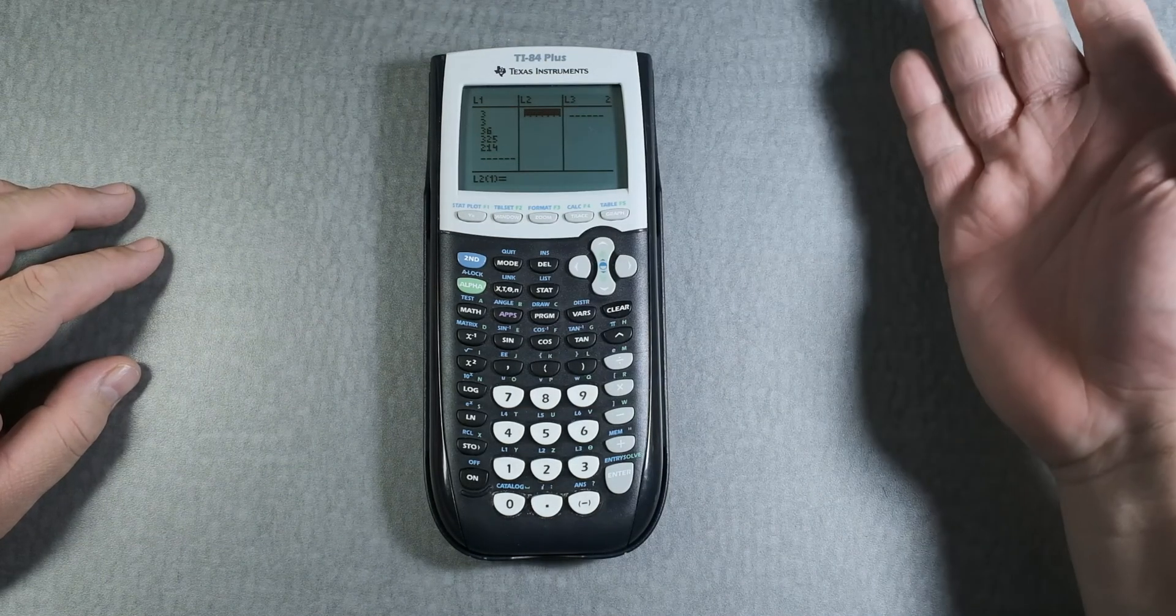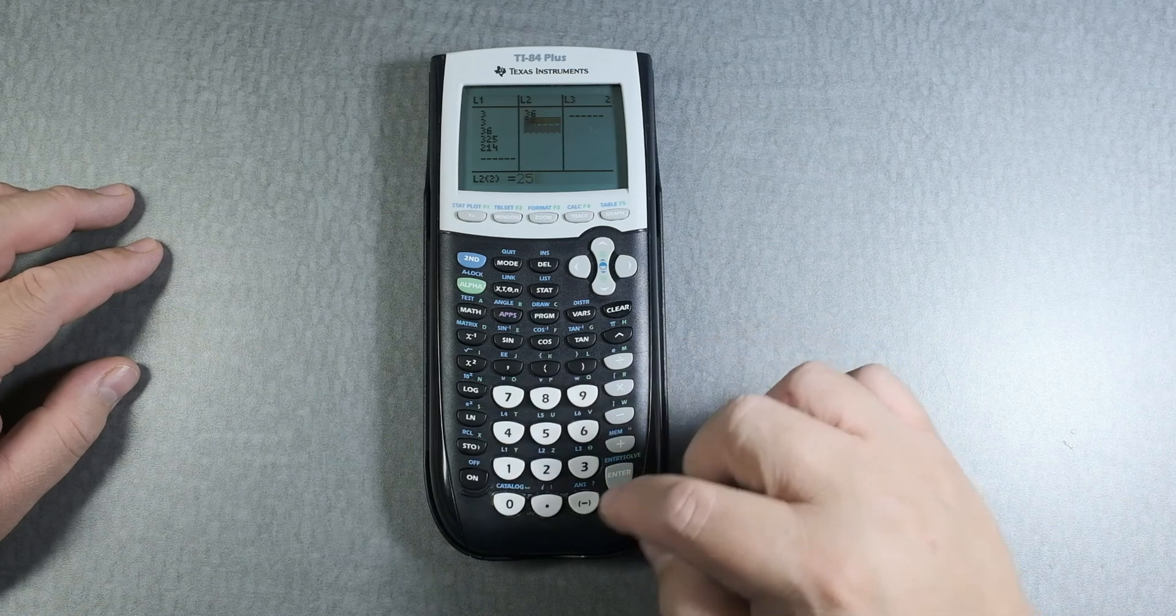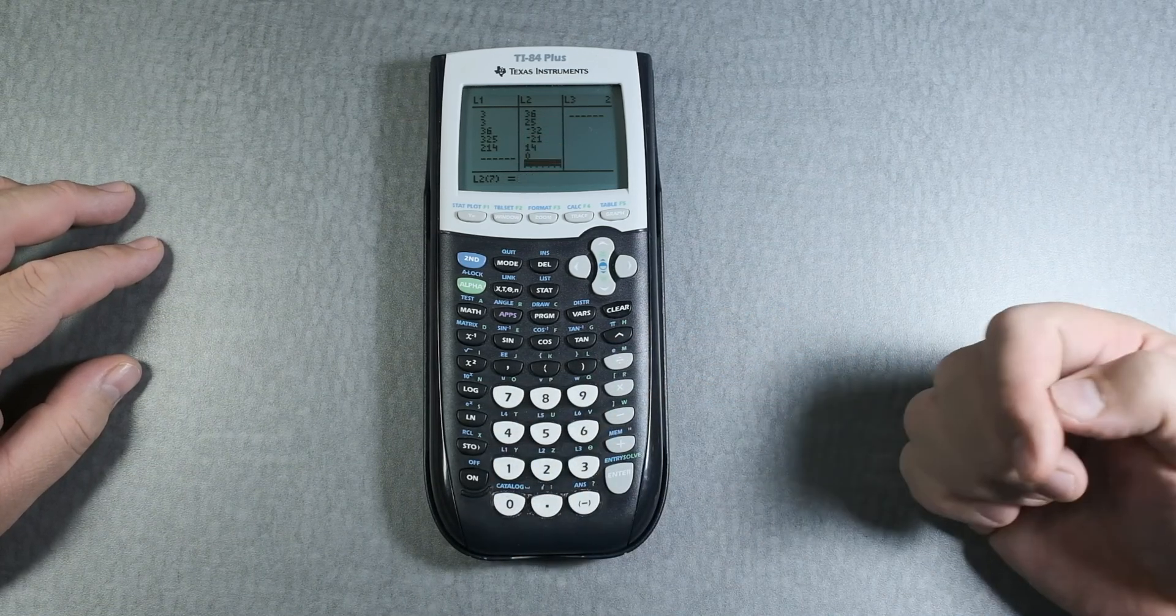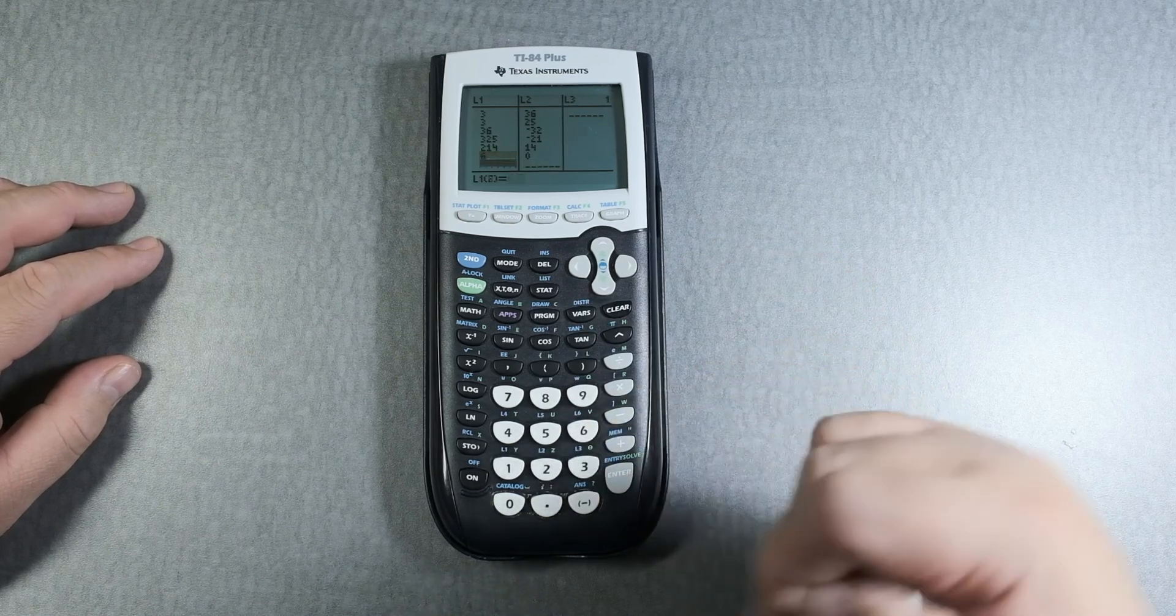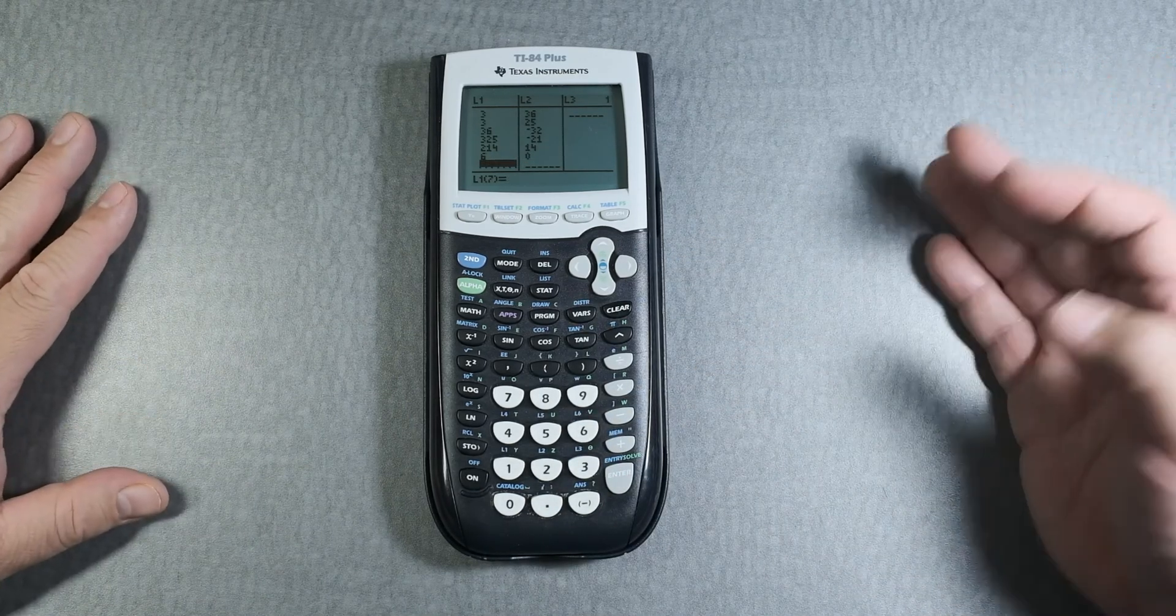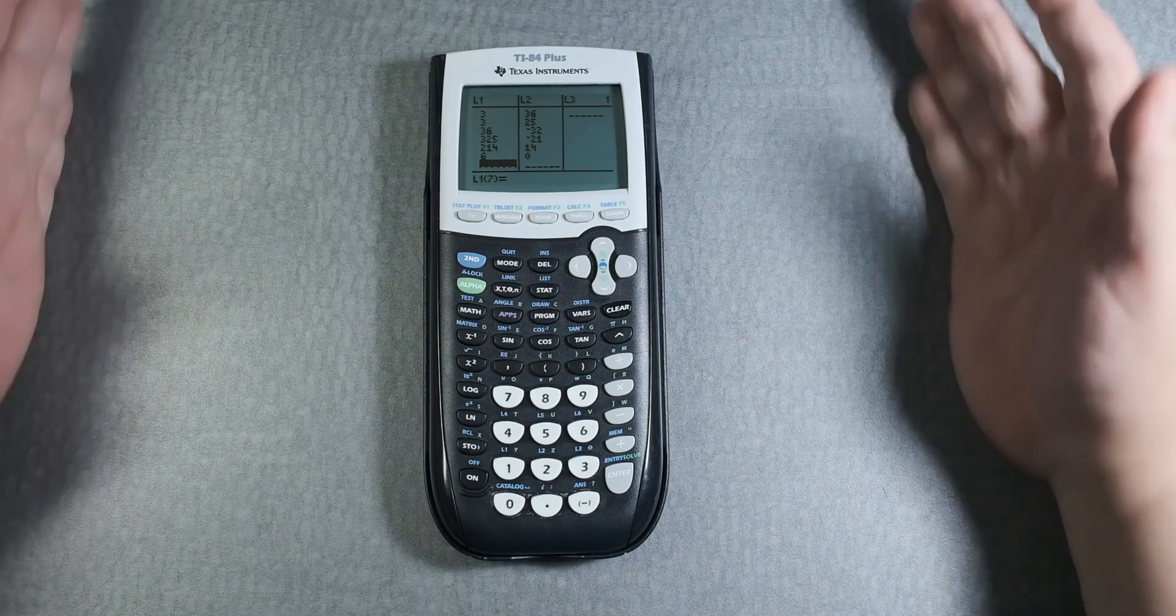In the next column over, let's say you want to add some more data. Yes, you can put negative values if you wish, even zero.